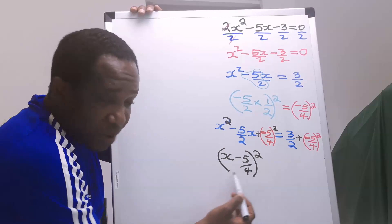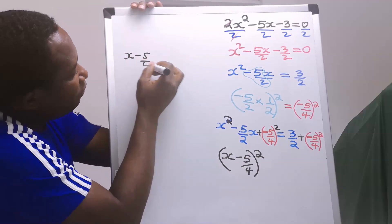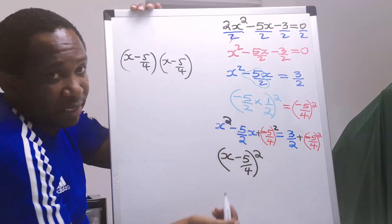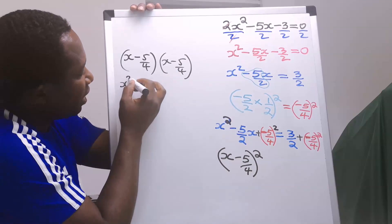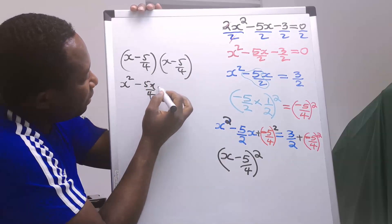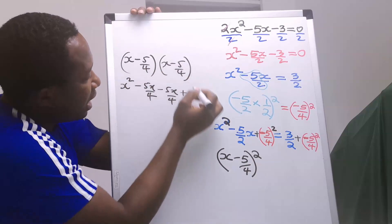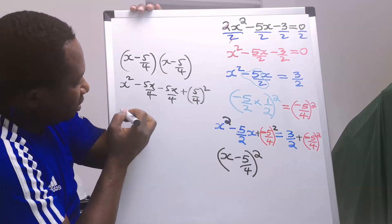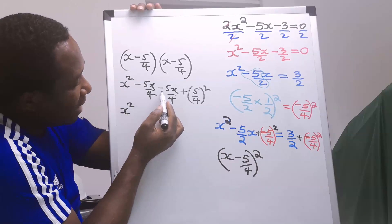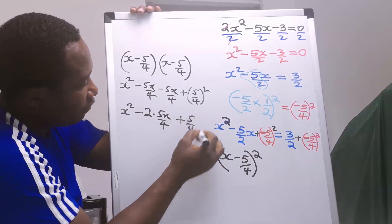If you open up this bracket, you are going to get everything back. That is, if you open up x minus 5 over 4, twice — x minus 5 over 4 — if you expand this bracket, you will get this back. x times x gives x squared. x multiplied by minus 5 over 4 gives minus 5x over 4. Minus times minus gives plus, and you have 5 over 4, all squared. This gives x squared, minus 5x over 4, minus 5x over 4, plus 5 over 4, all squared.